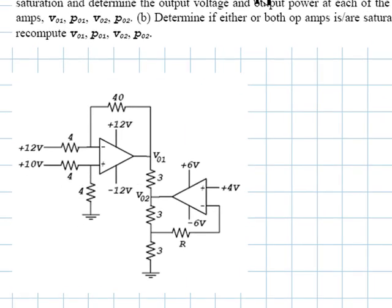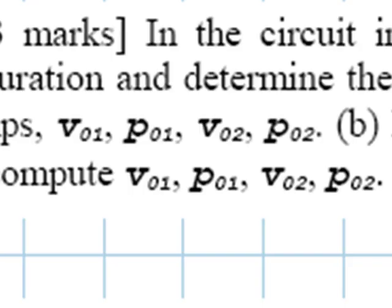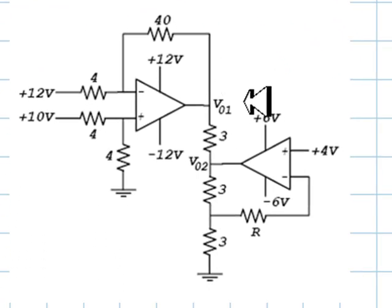In the circuit in the figure below, assume there is no saturation and determine the output voltage and the output power at each one of the two op-amps. That is, determine VO1, VO2, and also the power PO1 of this op-amp and PO2 here. Do that assuming there is no saturation. In the first part, neglect the presence of the power supply voltages plus and minus 12 and plus and minus 6 volts. Ignore them and proceed.